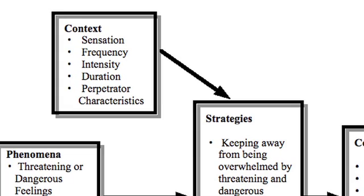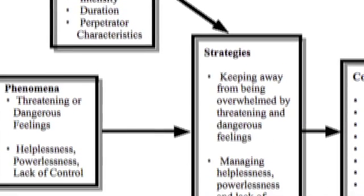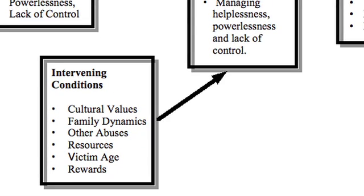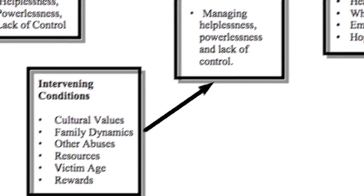There was a context for this happening: the context was the sensation, frequency, intensity, and duration of the phenomena and the strategies — how often, with whom, and so on. And the intervening conditions were the background features such as general cultural values, where different sub-groups may have responded differently to the situation. Family dynamics were clearly very important here, as were other abuses — presumably other people being abused perhaps as well in the family.